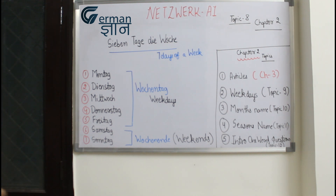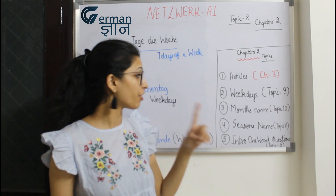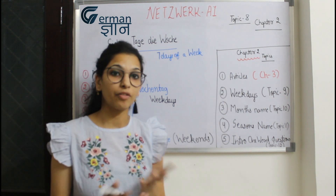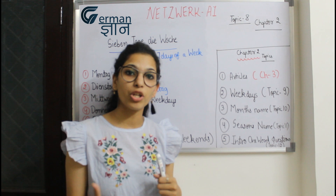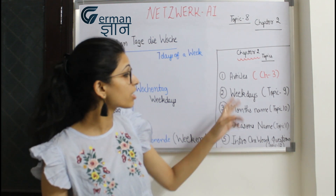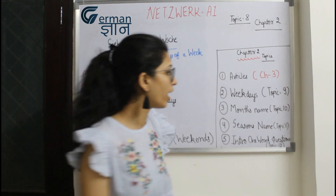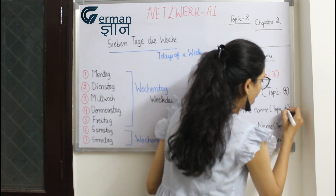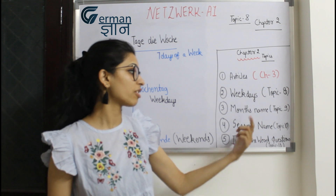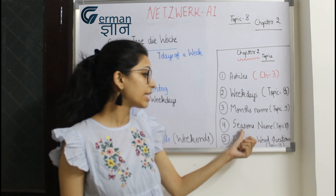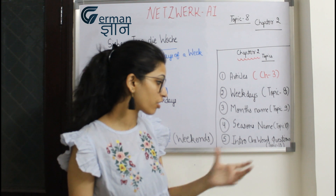So guys, this was the video for you. As I have started Chapter 2 today, Chapter 2 has these 5 topics. The first topic is the weekdays - you will be thinking why I started with weekdays, because the article topic I will be explaining in Chapter 3, so that will be easy for you to learn. This is Chapter 8, then 9, then 10 and 11. Next is the month's name video which will be your 9th episode, season's name will be your 10th episode, and the last topic of Chapter 2 will be introduction and one-word questions.